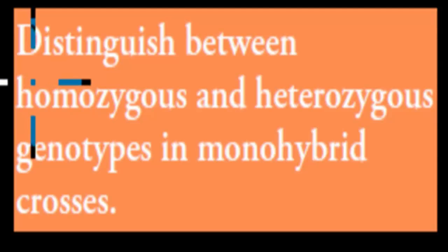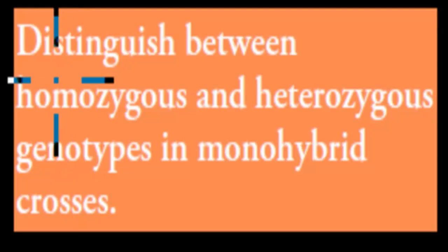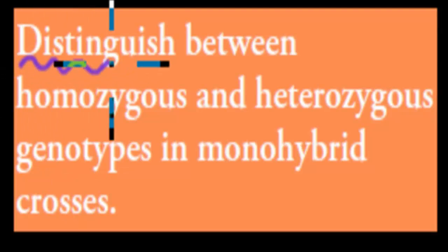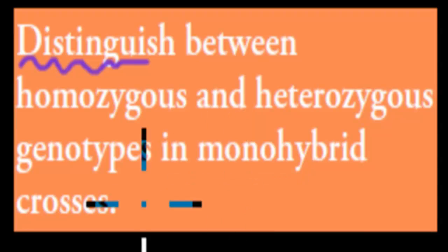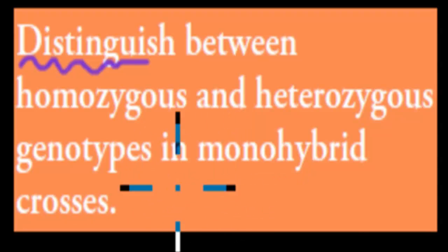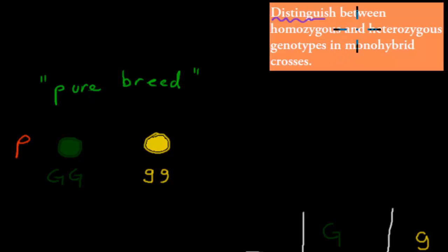In the last video we talked about genes and alleles and the difference between the two, and gave examples to show that difference. What I'll do in the next video is cover distinguishing between homozygous and heterozygous genotypes in monohybrid crosses. So we have to know the difference between homozygous and heterozygous genotypes.